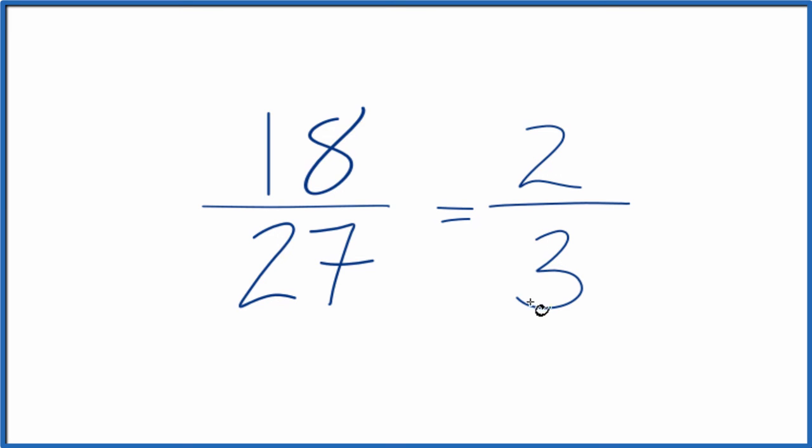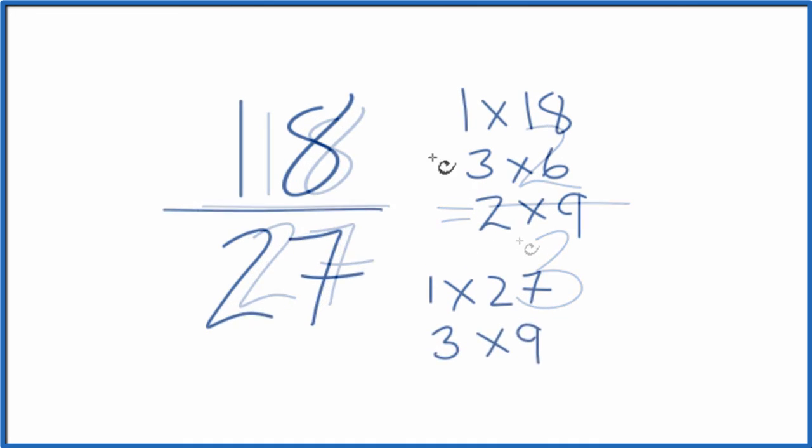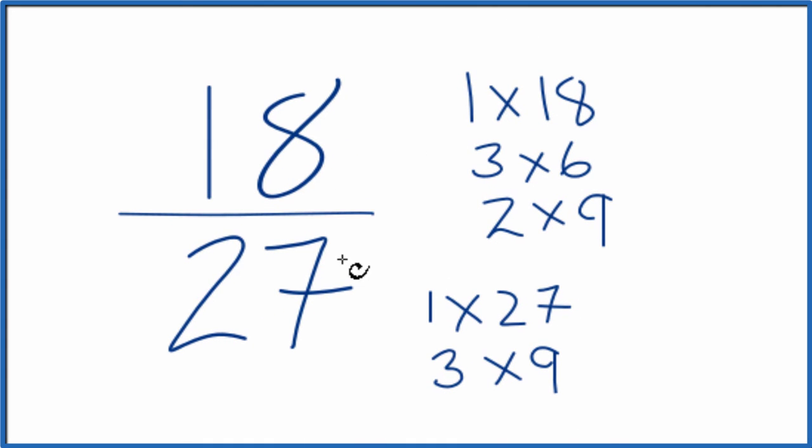If you didn't know that, you could write the factors out for 18 and for 27. These are the factors for 18 and these are the factors for 27. And you'll see that the greatest common factor is 9.